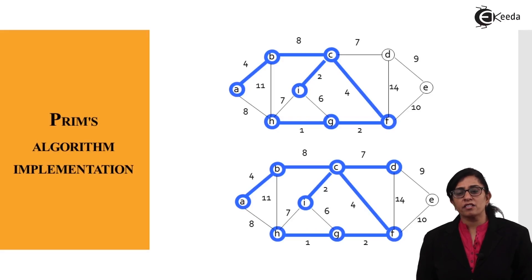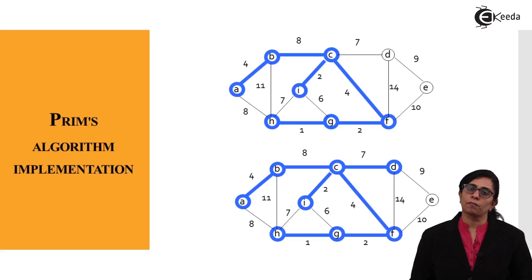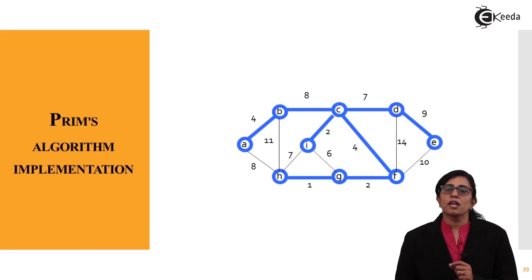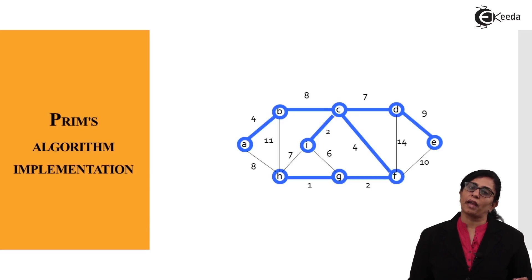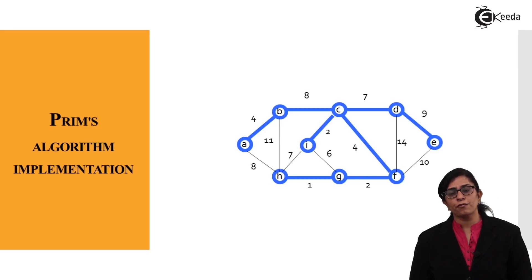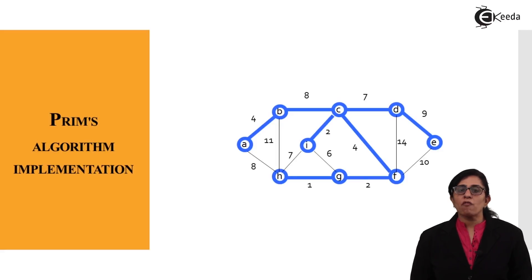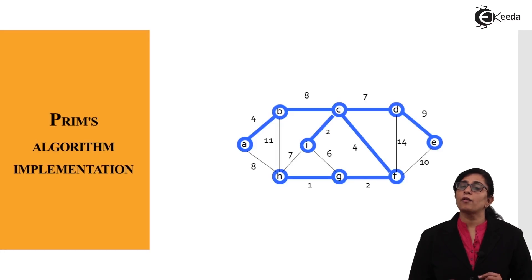From D there are two more outgoing edges with values 9 and 14. Since 9 is less than 14, D to E is added to the spanning tree. The edge E to F has value 10 but forms a cycle, so it is ignored. We have now traversed from A covering all vertices and found the minimum spanning values — all weights combined — traversing all vertices and edges without forming a cycle in Prim's algorithm.